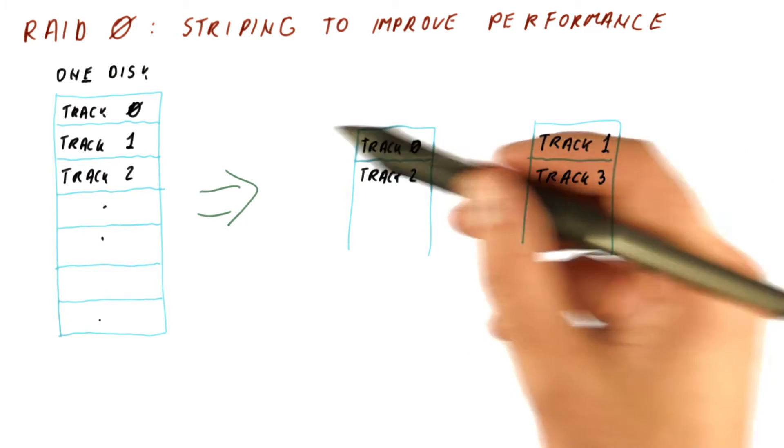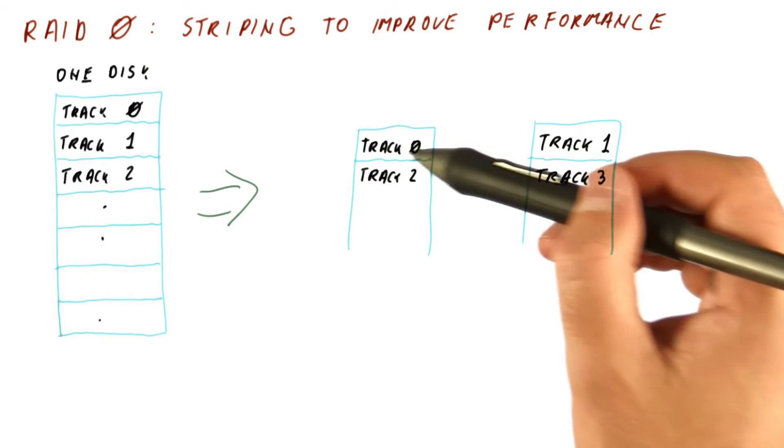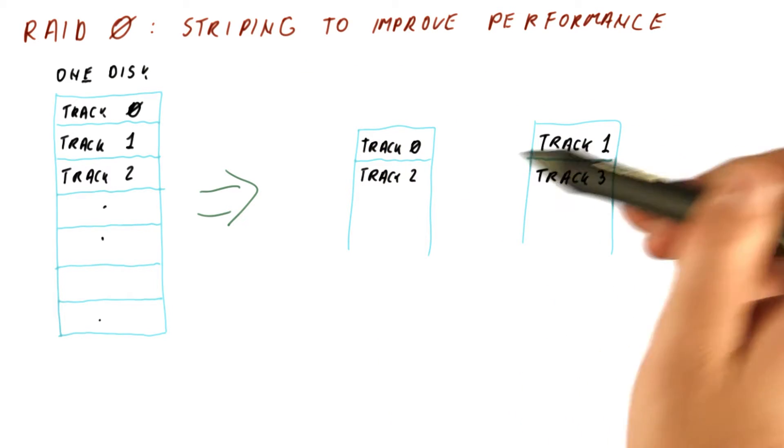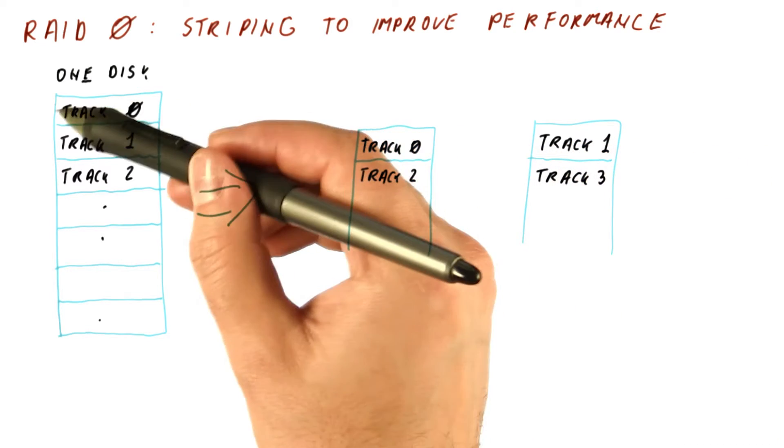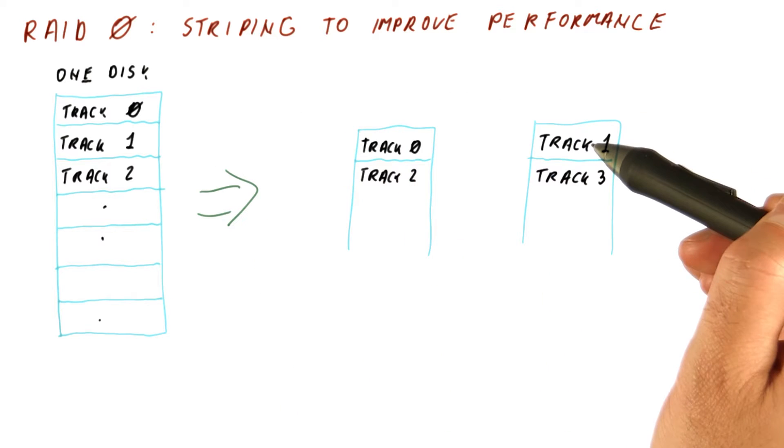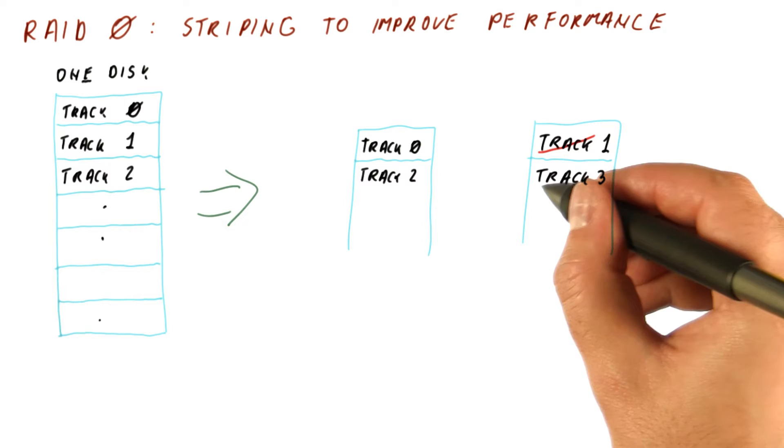The idea is that now each of these tracks is called a stripe. We're going to put stripe 0 here, stripe 1 here, and so on. So track 0 of the first disk gets track 0 from the overall large disk. Track 0 here, however, gets stripe 0. So instead of calling these tracks...